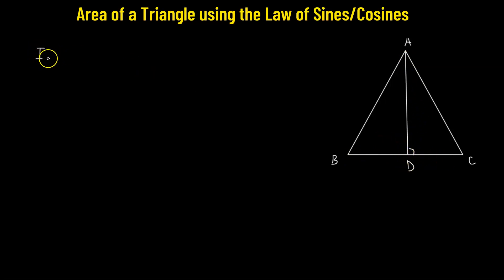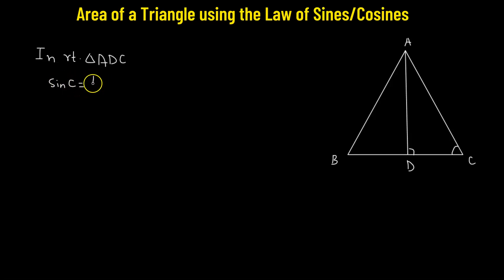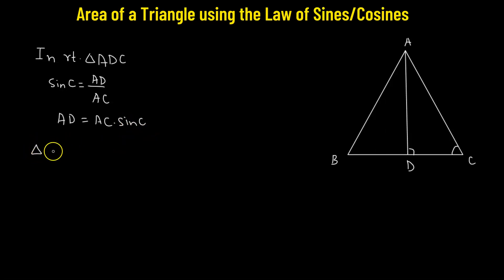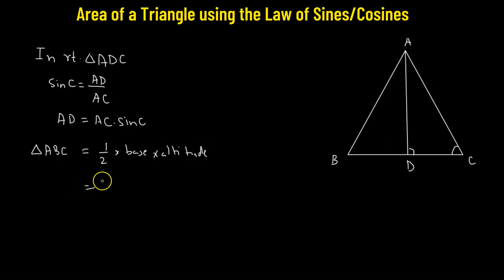Let's consider the right angle triangle ADC. If we take sine of angle C, then by definition sine C is the ratio of the perpendicular AD over the hypotenuse AC. That means AD equals AC times sine C. Now the area of triangle ABC equals half times base times altitude. The base is BC and the altitude is AD, so AD is AC times sine C.